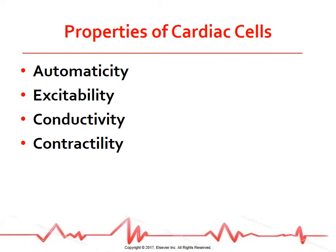Four properties of heart cells allow the conduction system to start an electrical impulse, send it through the heart tissue, and stimulate muscle contraction. Automaticity is the ability to initiate an impulse spontaneously and continuously. Excitability is the ability to be electrically stimulated. Conductivity is the ability to transmit an impulse along the membrane in an orderly manner. Contractility is the ability to respond mechanically to an impulse.